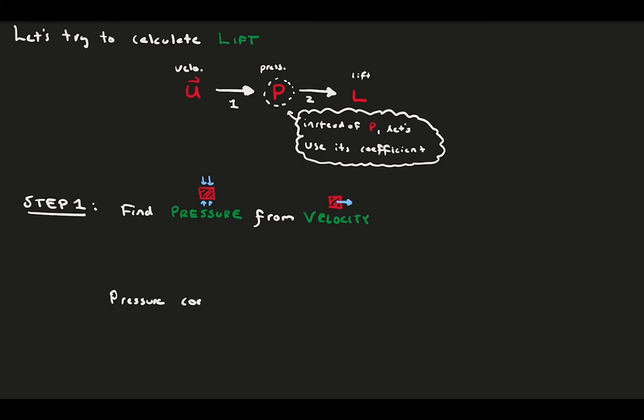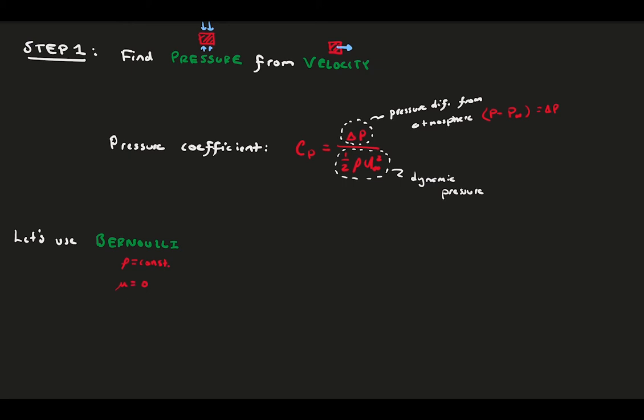The change in pressure relative to the freestream quantity is divided by one-half rho u squared, commonly known as the dynamic pressure. We assume we know the dynamic pressure, but how do we get to delta p from the velocity field? Well, if our flow is incompressible and inviscid, which it is, we can assume Bernoulli holds true for our flow, and the Bernoulli equation relates a flow's pressure to the velocity.